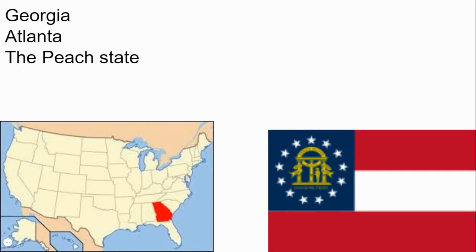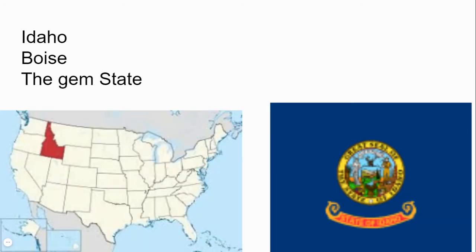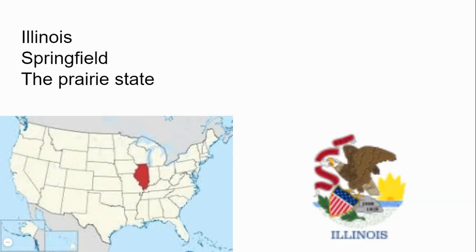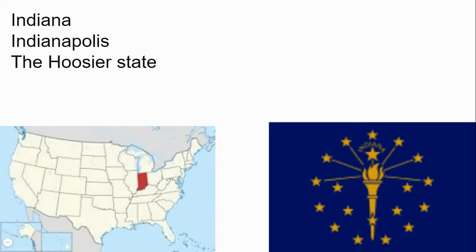This state is Georgia and the capital is Atlanta and the nickname is the Peach State. This state is Hawaii and the capital is Honolulu and the nickname is the Aloha State. The state is Idaho and the capital is Boise and the nickname is the Gem State. The state is Illinois and the capital is Springfield and the nickname is the Prairie State.